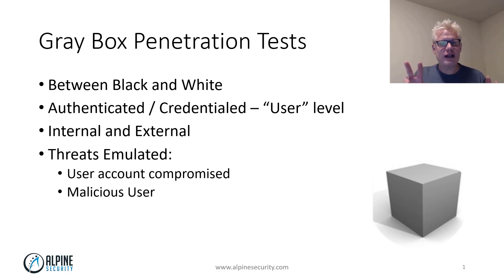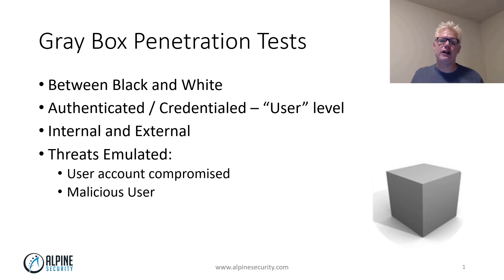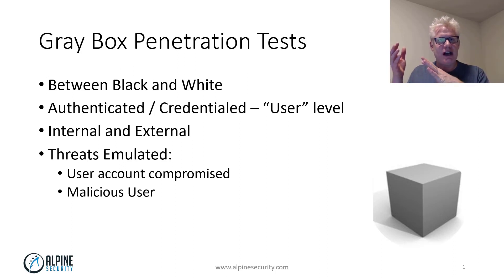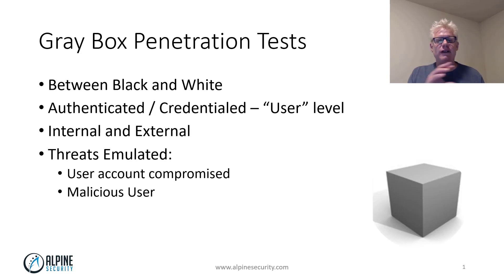There are really two broad categories for gray box penetration testing: internal and external. The threats we're trying to emulate with gray box are typically these two: a user account is compromised — so if I'm Larry, a user on your web application, what can the attacker do from Larry's perspective? Or if Nancy's account is compromised via a phishing email, what can the attacker do from Nancy's perspective on the internal network? And what if Larry or Nancy is just malicious?